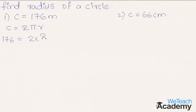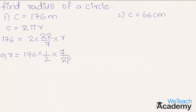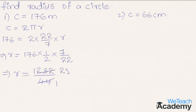By transferring the terms to the left-hand side we get r equal to 176 into 1/2 into 7/22 — that is the reciprocal of 22/7. Multiplying all the terms in the numerator: 176 into 7 is 1232, divided by 2 into 22 that is 44. Simplifying: 44 twenty-eight times is 1232, so we get r equal to 28 meters.